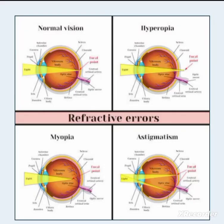Regarding refractive errors, they are mainly divided into hyperopia, myopia, and astigmatism. In normal vision, the image is formed on the retina, but in case of hyperopia the image is formed behind the retina, so the person is not able to see the nearest objects.